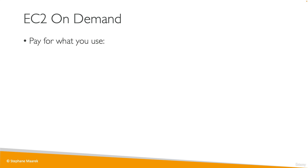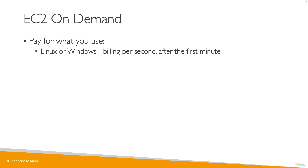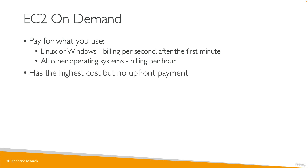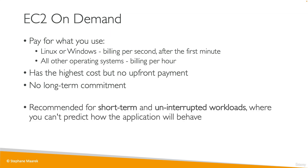Now let's look at EC2 on demand. You're going to pay for what you use. If you're using Linux or Windows, you're going to get billing per second after the first minute, or for all other operating systems, you're going to get billing per hour. It has the highest cost but no upfront payments and no long-term commitments. That means it's recommended for short-term and uninterrupted workloads where you cannot predict how the application will behave.